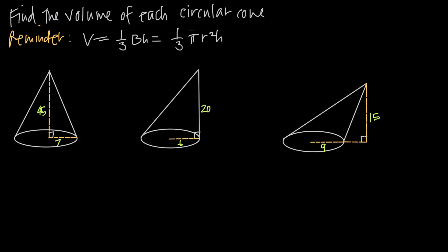In this video, we're talking about how to find the volume of a circular cone. When we talk about a circular cone, we're talking about a three-dimensional object where the base of the cone is a circle. So when we say circular cone, we mean a cone where the base is a circle.